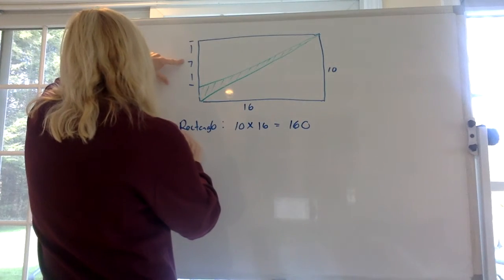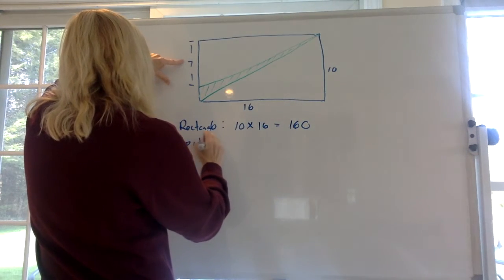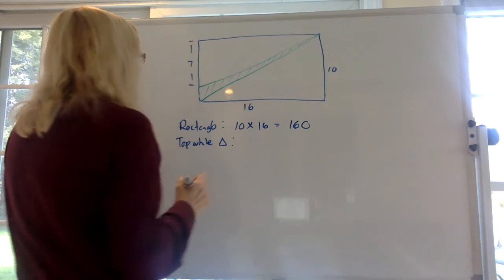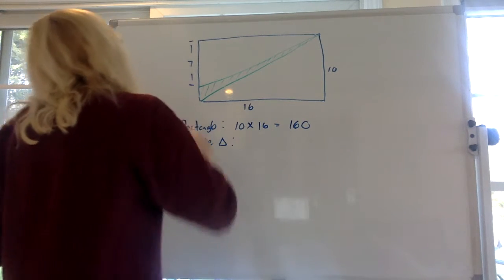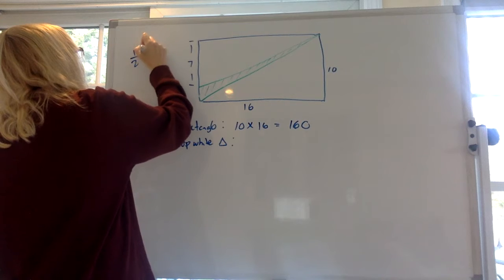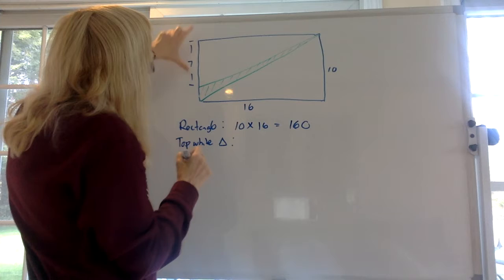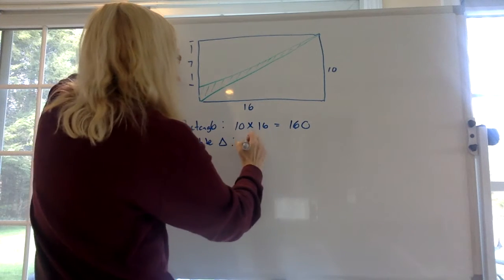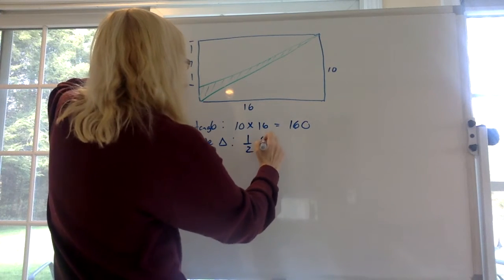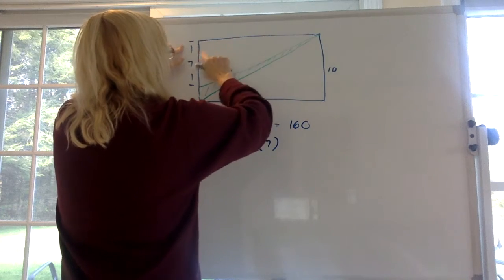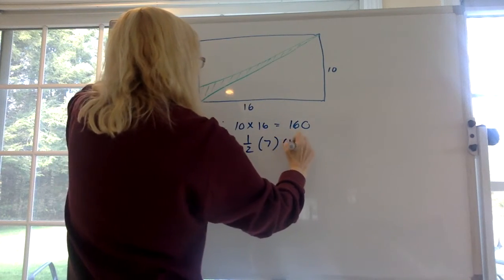What about the top white triangle? What's the formula for a triangle? It's 1/2 base times the height. So let's see. Let's consider this the base. So it's 1/2 of 7. So this has to be the height, right? Times 16.